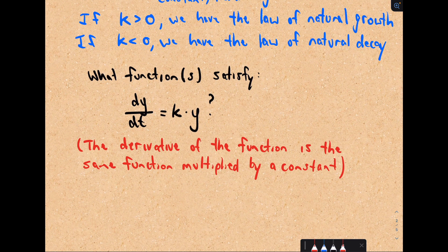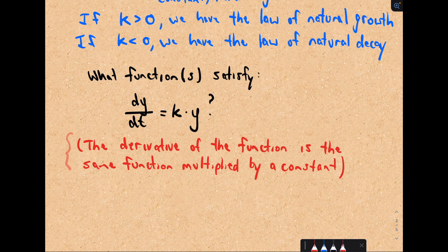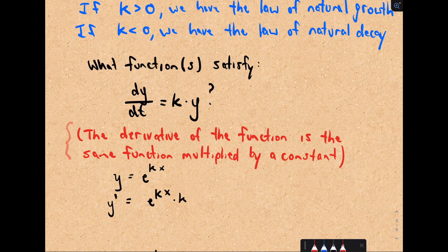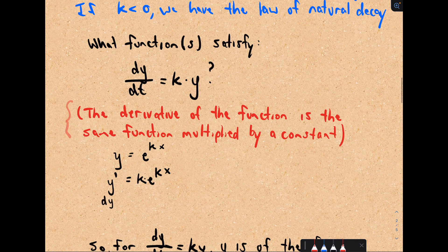For you calculus people, can you think of a function that satisfies dy/dt = k·y? That means the derivative of the function equals the function multiplied by a constant. You may remember that the derivative of e^x is just e^x. If we put a constant k in the exponent, then by the chain rule the derivative of e^(kx) is k·e^(kx), which equals k times y. So this function satisfies the differential equation, and it turns out it's the only one.